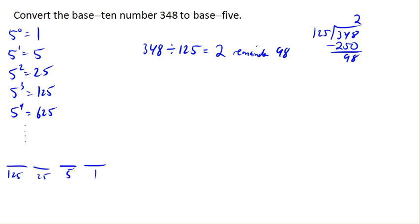And so what this tells us is that when we write our final number, that 2 is going to be the place value, the number corresponding with the place value of 125. In other words, there are 2 125's inside of 348.